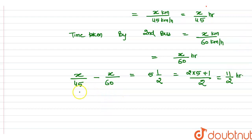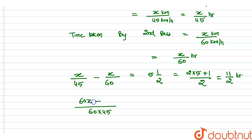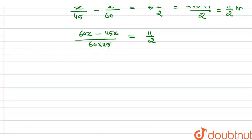Now we simplify by taking the LCM of 60 and 45, which is 2700. This gives us 60X minus 45X over 2700 equals 11 by 2, which simplifies to 15X divided by 2700 equals 11 by 2.